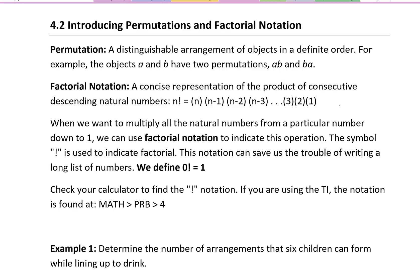In this lesson I'm going to introduce permutations and factorial notation. Permutation is a distinguishable arrangement of objects in a definite order. For example, objects A and B have two permutations. They can be ordered AB and BA.